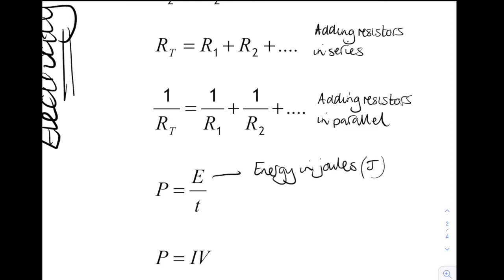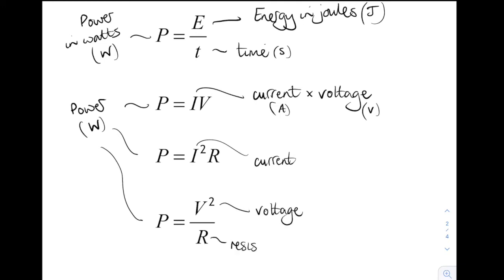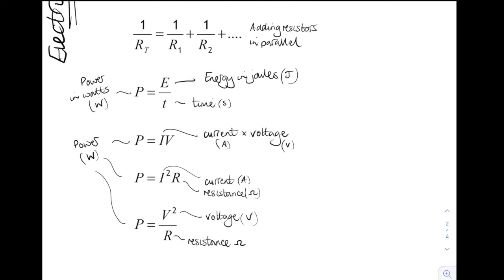Then we have four power equations. Power is energy over time. Energy is in joules. Time in seconds. Power is always measured in watts. No matter which equation you use. And there's our usual symbols for current and voltage and resistance. Again, so watch out which power equation you're using. Depends on the numbers in the question.